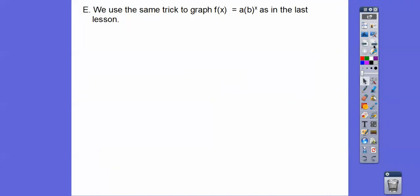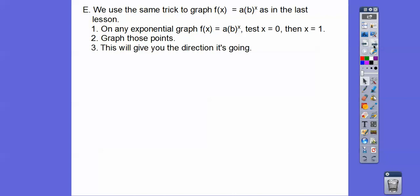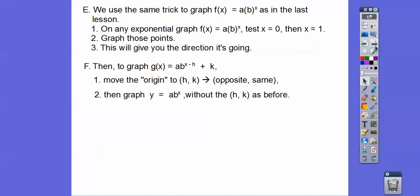And we use the same trick to graph f(x) equals a times b to the x as in the last lesson. And so that trick is on any of these exponential graphs, do a t chart. Test x equals 0, x equals 1. And then graph those points and that gives you the direction it's going. So it's the same formulas. Then to graph, when we insert the h and k, we move the origin to hk. And it's always opposite this number. So if this was a minus 2, we'd go to the right. If it was a plus 2, we'd go to the left. And so if that was like a plus 5, we'd go up. If it was a minus 5, we'd go down. So opposite same. And then you can get rid of the h and k. Once you move the origin, then drop off this h and k and just graph y equals a times b to the x. And just do test 0 and 1 and just pretend like that this is the origin and then you're good.